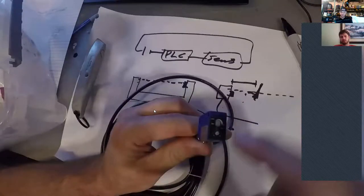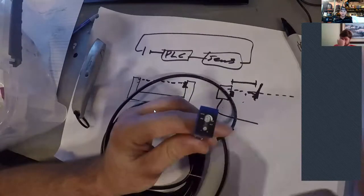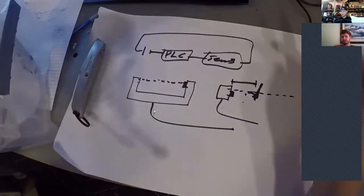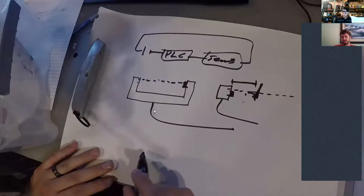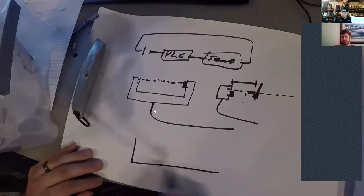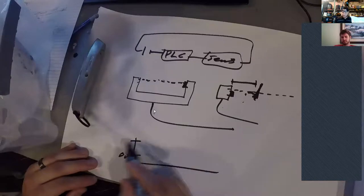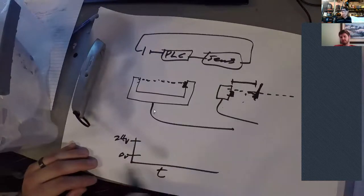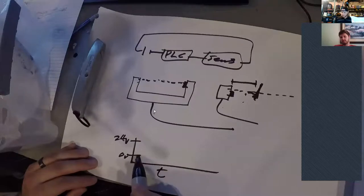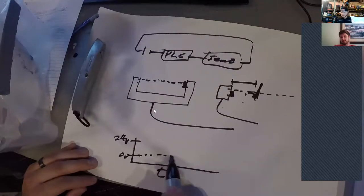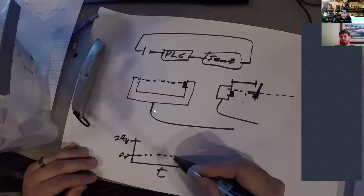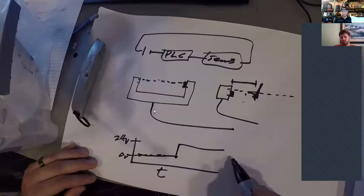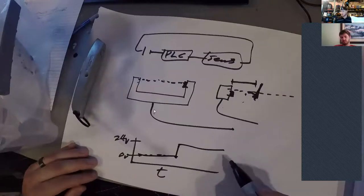So the disadvantage of this type of sensor is that it's not quite as precise and it will have a minimum sensing distance. So there'll be some distance from the face of this that it basically can't sense stuff in front of it.